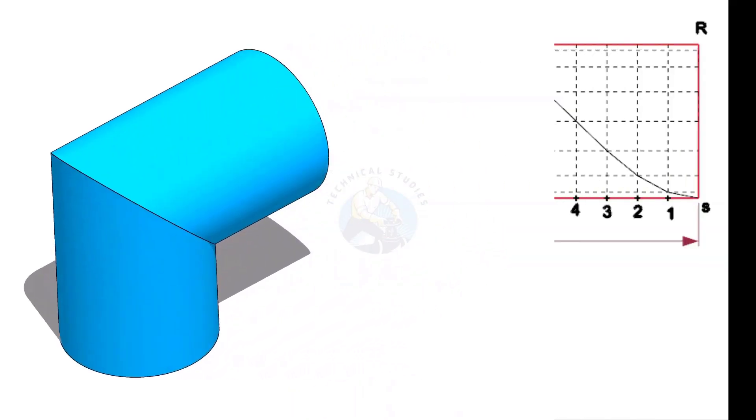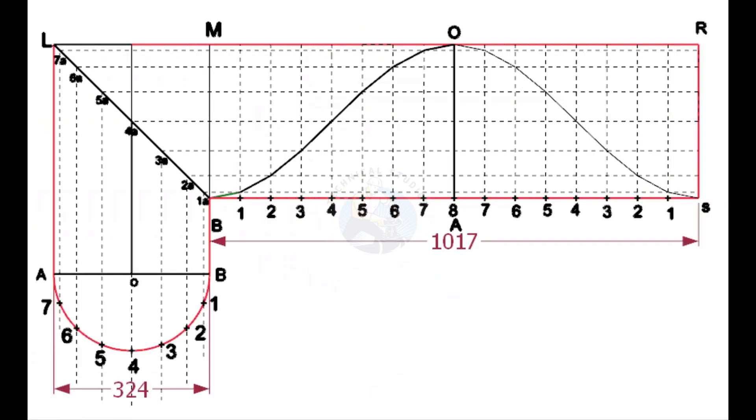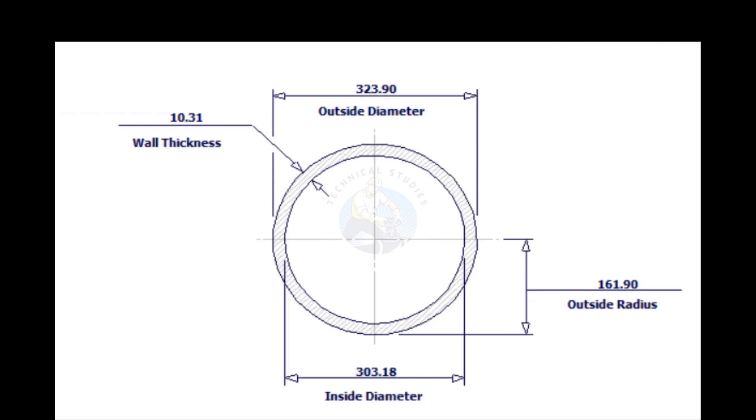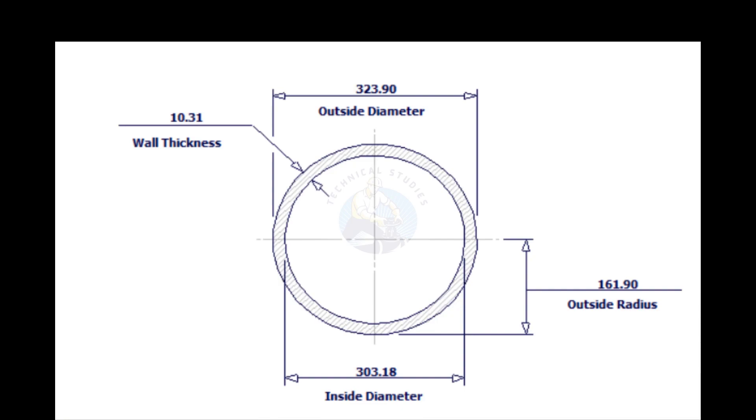In this tutorial, we will lay out a 12-inch single-cut miter. Outside diameter of a 12-inch pipe is 324 millimeters. Let us calculate the circumference. Multiply 324 into 3.14. The answer is 1017 millimeters.